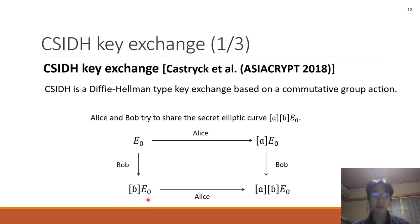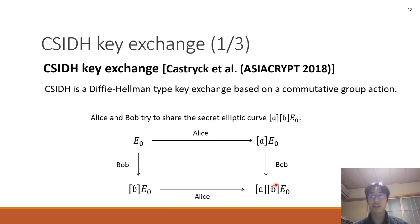Next, Alice computes the group action on B*E0. As this group action is commutative, they share the same elliptic curve. This is the CSIDH key exchange.